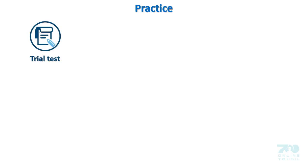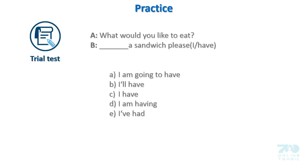Let's have some trial tests now. A: What would you like to eat? B: A sandwich, please. Now you have to choose the right answer from: A. I am going to have. B. I'll have. C. I have. D. I am having. E. I have had.